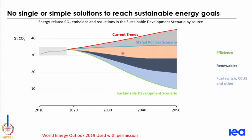We can achieve the sustainable development scenario through a combination of energy efficiency, renewables, fuel switches, and carbon capture and utilization. This is the kind of pathway required at an overall macro scale. The projected current trend shows that if the policies that we have put in place work, we can go down by a certain amount, but even then CO2 emissions would still increase. If we want to really make it sustainable, we have to go for aggressive efficiency, renewables, fuel switch, and CCS.